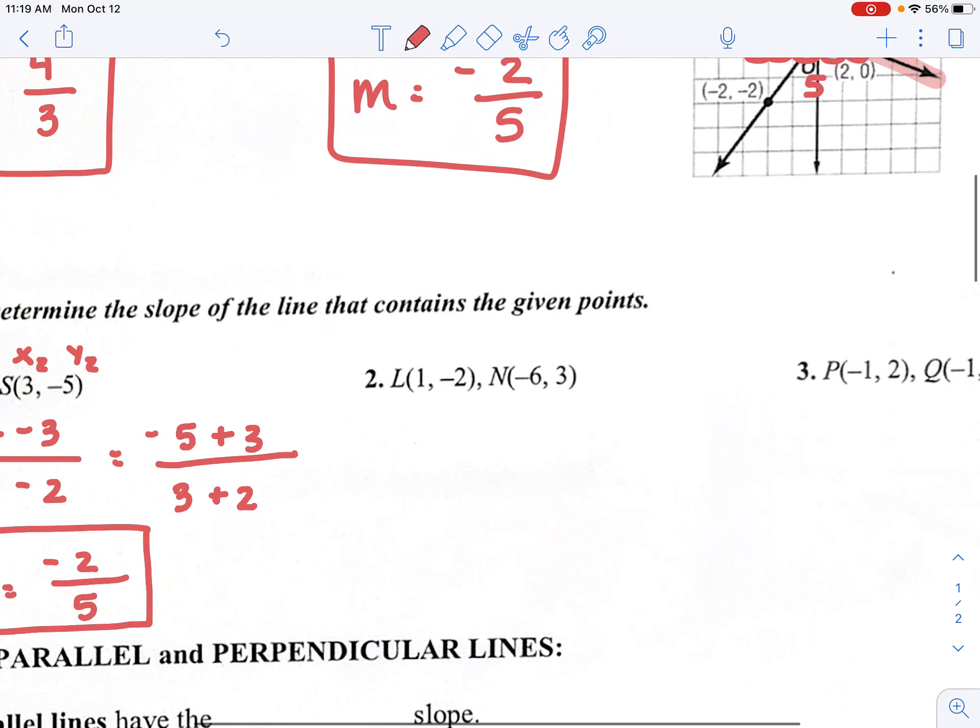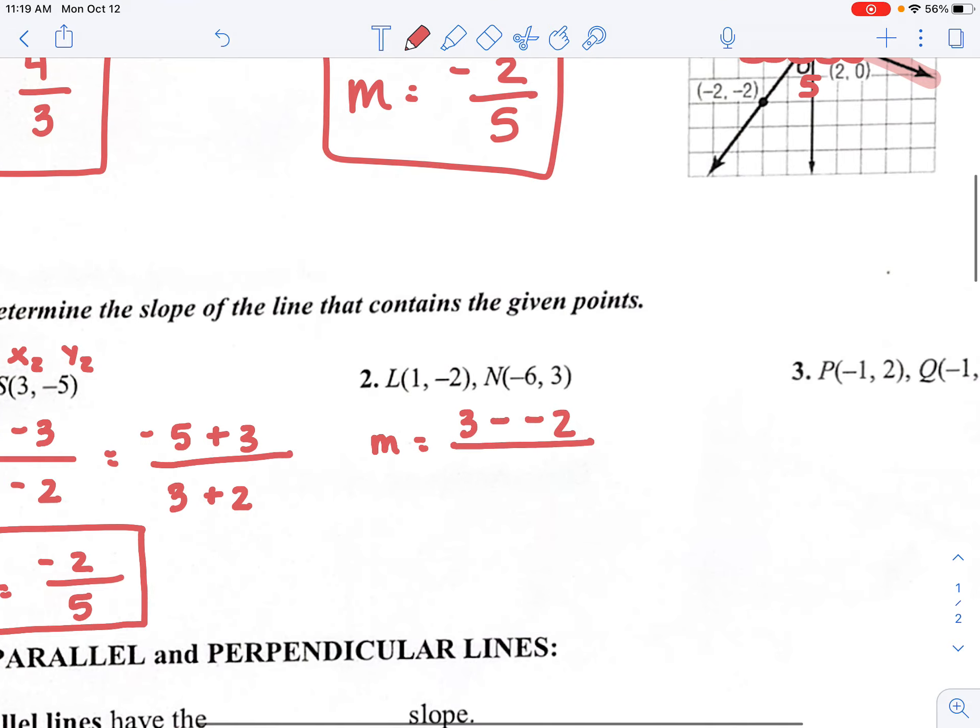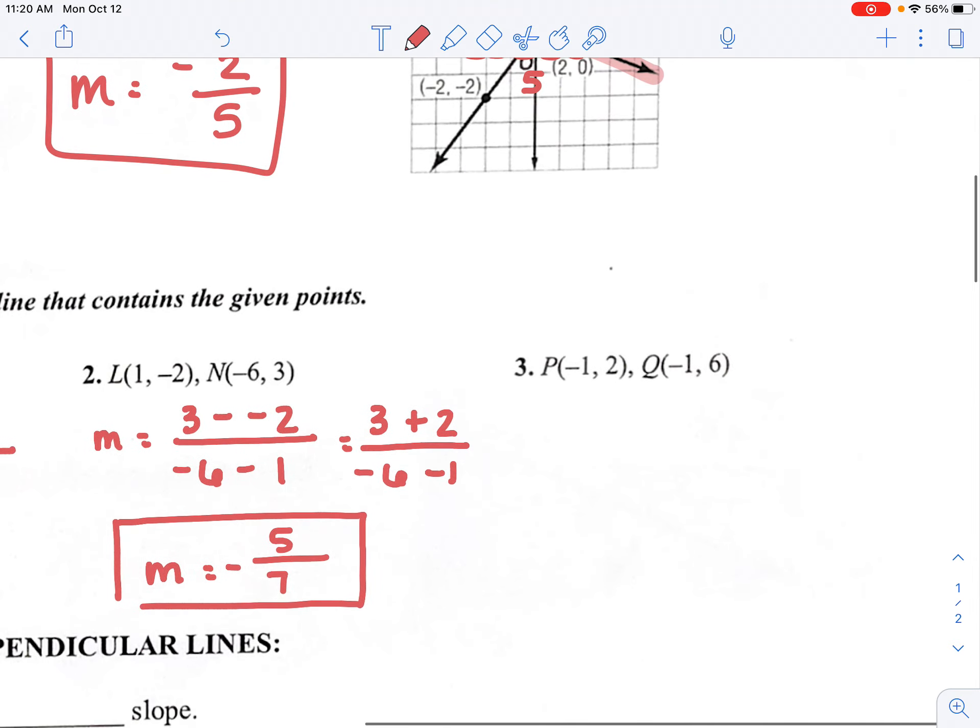I want you to pause and try this next one on your own. Once you try it on your own, then come back and we'll do it as a class. Hopefully, you've done it on your own. First slope here. I would say my y2 value, 3 minus my y1, which is negative 2, over negative 6 minus my 1. This would become 3 plus 2, over negative 6 minus 1. So my slope should be 5 over negative 7.